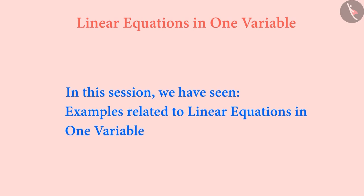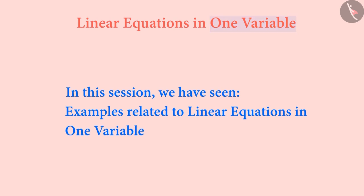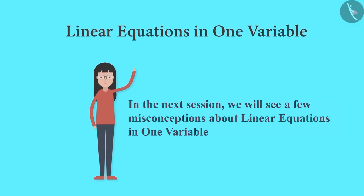In this session, we looked at some examples of linear equations in one variable. One variable means there is only one variable in the equation, and linear means the highest power of that variable is 1. In the next video, we will see a few misconceptions about linear equations in one variable.